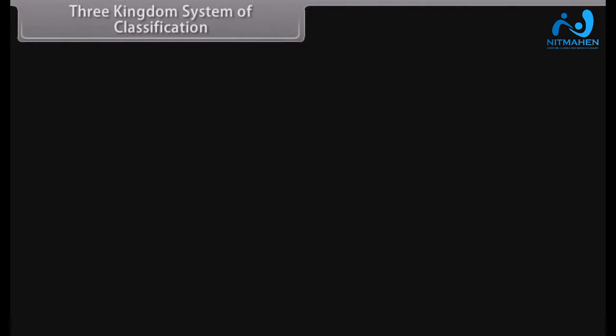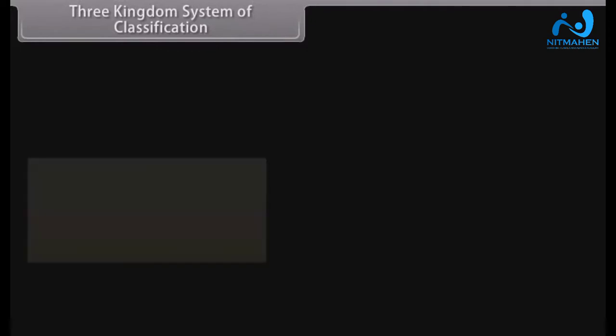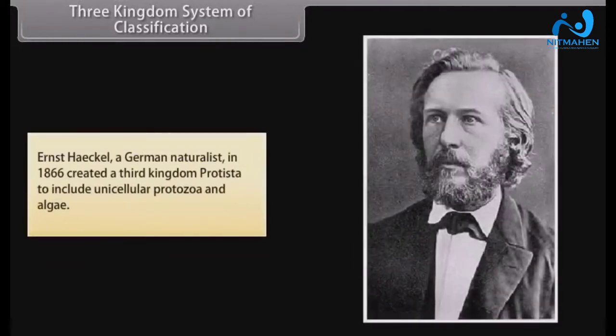The Three Kingdom System of Classification: Ernst Haeckel, a German naturalist, in 1866 created a third kingdom, Protista, to include unicellular protozoa and algae.